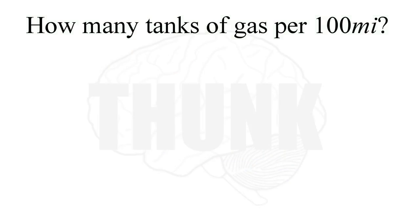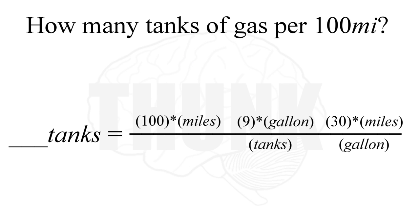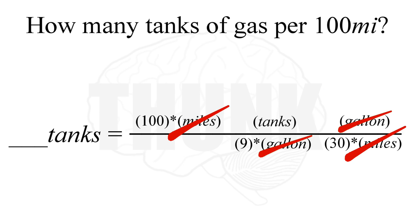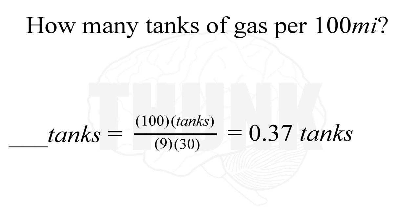In that example, we just want tanks left over when we're finished. We want everything else to cancel on either side of the fraction bar. Some of these things look upside down, so we just divide by those numbers instead of multiplying. Cancel, cancel, cancel — and there's the answer. Just knowing how to do basic fractions lets you calculate almost anything.